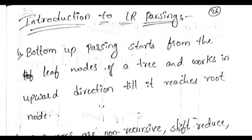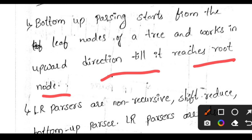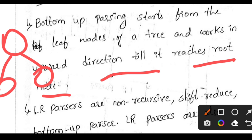Welcome back to our channel. In today's video we are going to discuss introduction to LR parsing. LR parsers are bottom-up parsers. Bottom-up parsing means it starts from the leaf nodes of a tree and works in an upward direction till it reaches the root node. So bottom-up parsing means the scan starts from leaf nodes and ends at the root node.